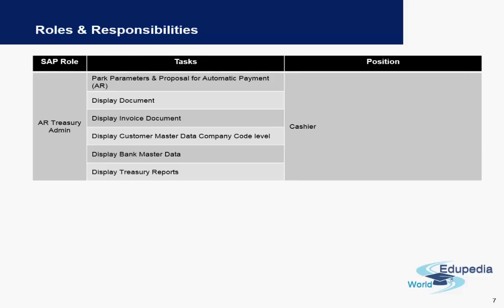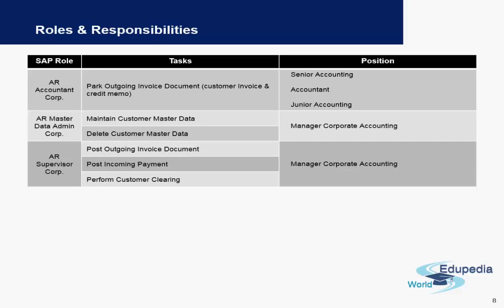Supervisors are also responsible for displaying reports in the system on a monthly basis. We can also have the treasury team, who have the authority to park parameters or proposals for automatic payments and can display bank master data — these are basically cashiers in the organization. We can also have AR accountant corporate or data administrator corporate, who are the corporate accounting team with further authorization to different transactions.